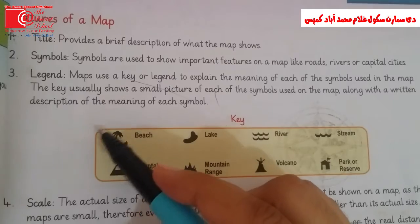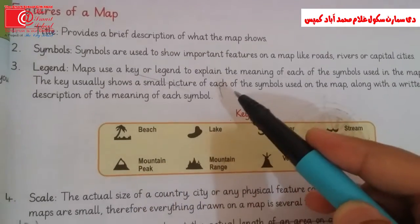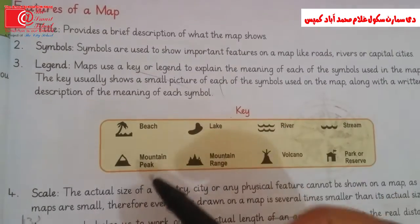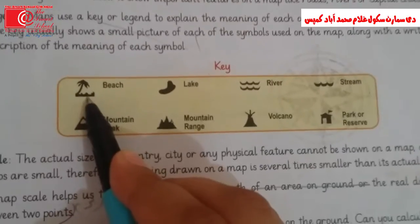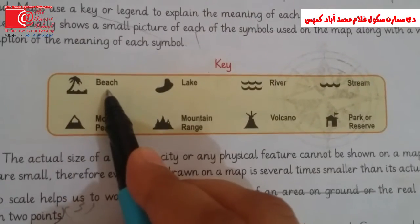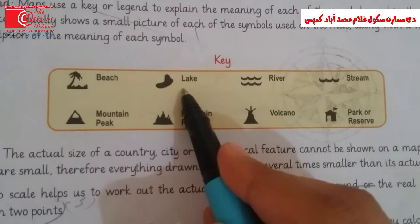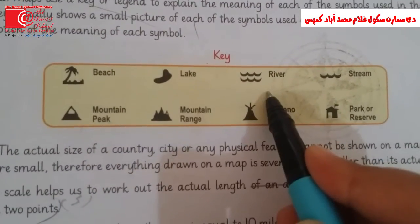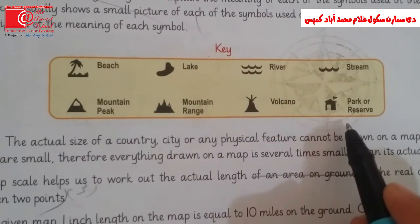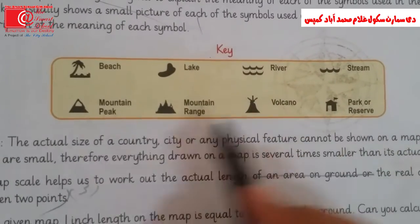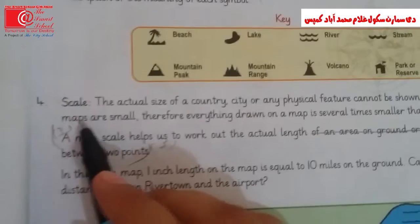For example, here is a beach — this is the beach symbol, and it is described in the written key. Here you can see: lake, river, stream. Each symbol on the map has a corresponding description in the key.